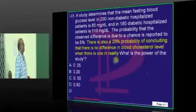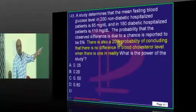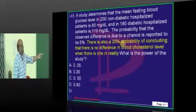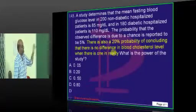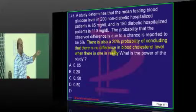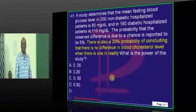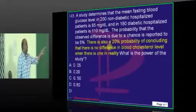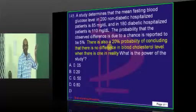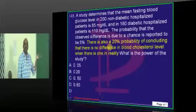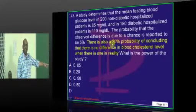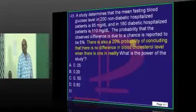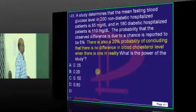One minus beta will give you the power. In this given case, doctor, what is the beta value? There is a 20% probability of concluding that there is no difference though there is a difference. Hence, 0.2 is the beta. 1 minus 0.2 is 0.8, which is the power of the study.